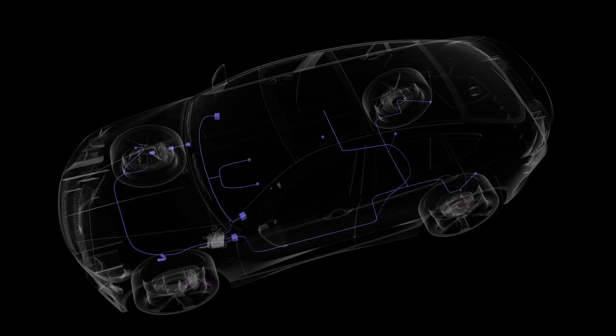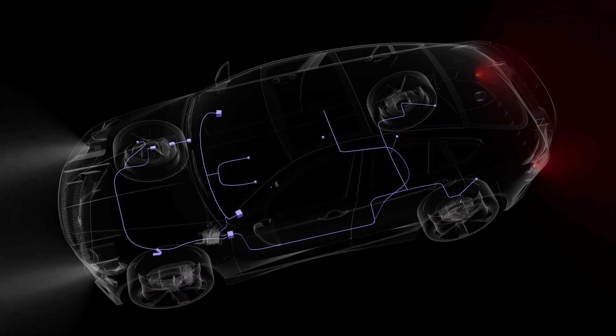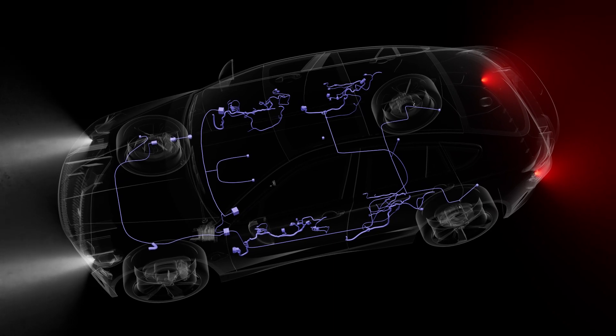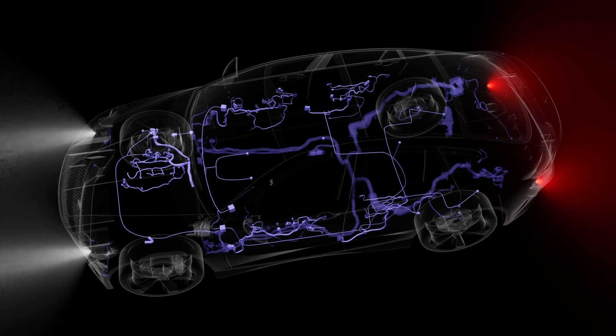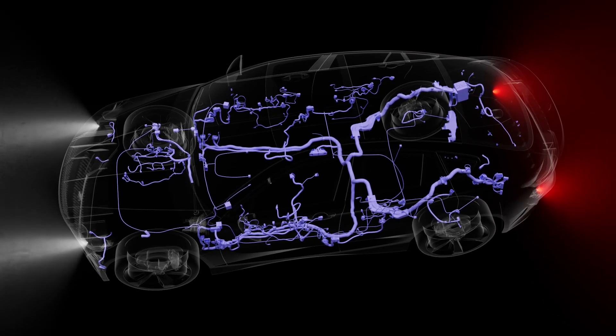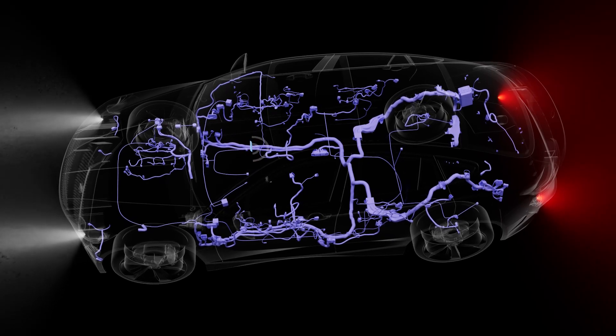Automotive electrical architecture used to be simple: lighting, audio, power windows and doors. Then OEMs began adding features that required increasingly more complicated electronics, more devices in the vehicle.